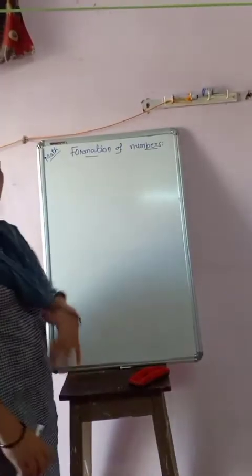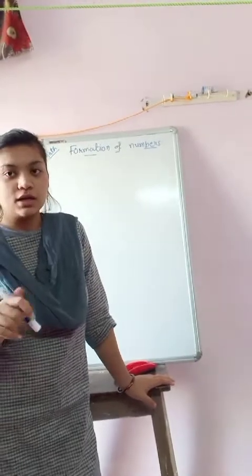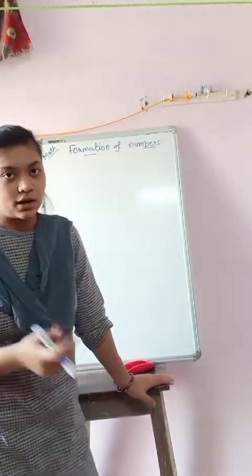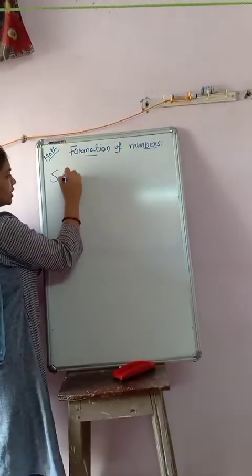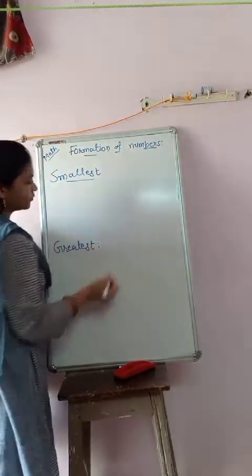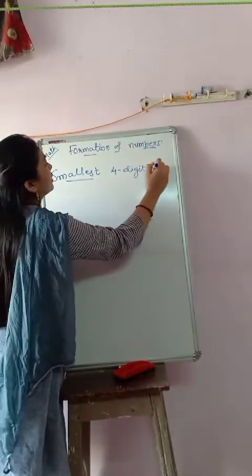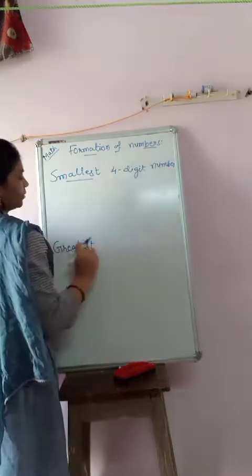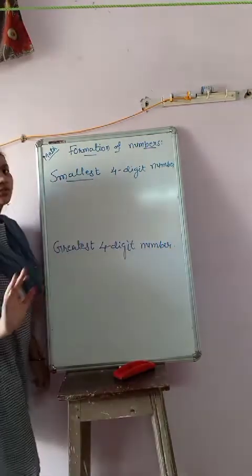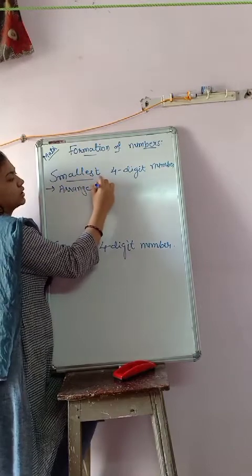Now we are going to learn the next topic: the formation of numbers. Formation means to make a form. You have to make the smallest number and also the greatest number. We are learning four-digit numbers, so you have to make the smallest four-digit number. To make the smallest number, arrange the digits in ascending order.